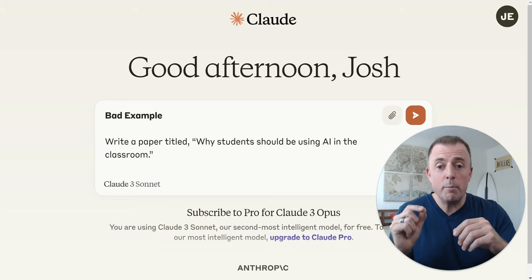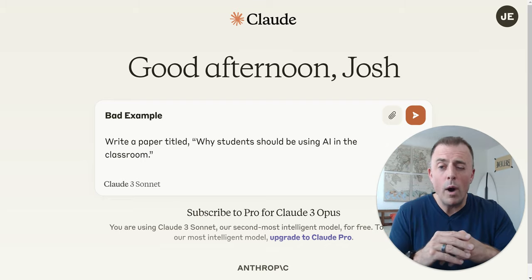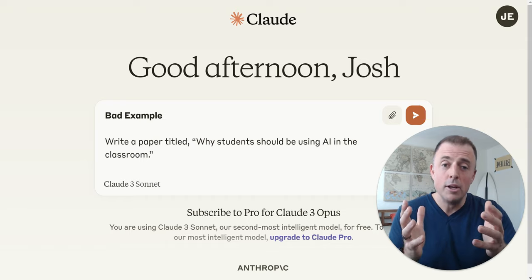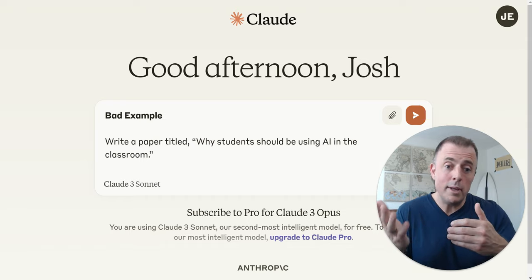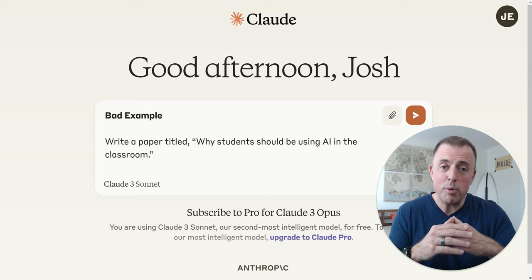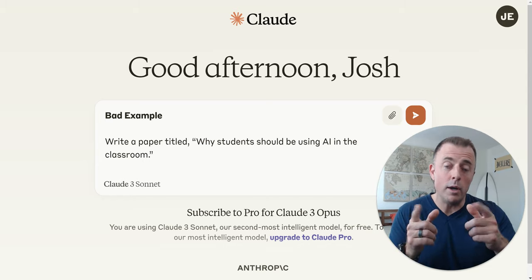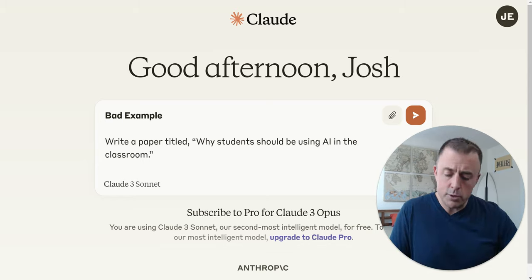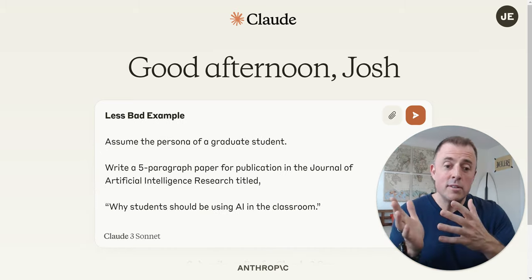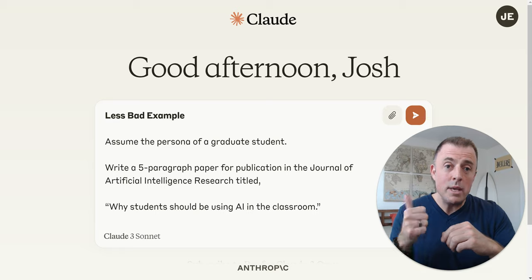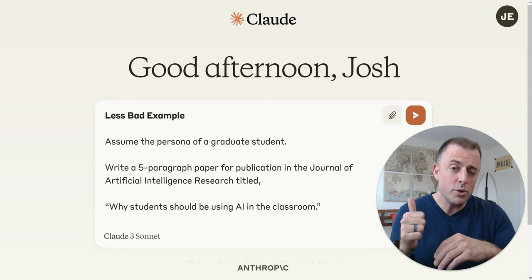So, bad example: 'Write a paper titled Why Students Should Be Using AI in the Classroom.' You could get a paper — there will be a result if you hit enter with this prompt — but it's probably not going to be the result that you want. So let's refine this to a less bad example. Here you can see we've used the PAO model: Persona, Audience, and Output.